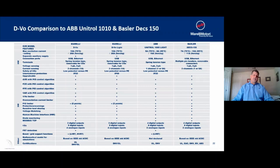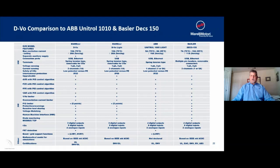When comparing the DVO to competitors — in this case the ABB Unitrol 1010, which we see offshore, and the Basler DEX 150 system common in North America — you'll note that the DVO compares very favorably with both. For full forcing, we're rated at 70 degrees C while our competition is in most instances at 55 degrees C. We offer the same functional parameters and Modbus capability, so we match up very well when compared to the ABB and Basler systems.